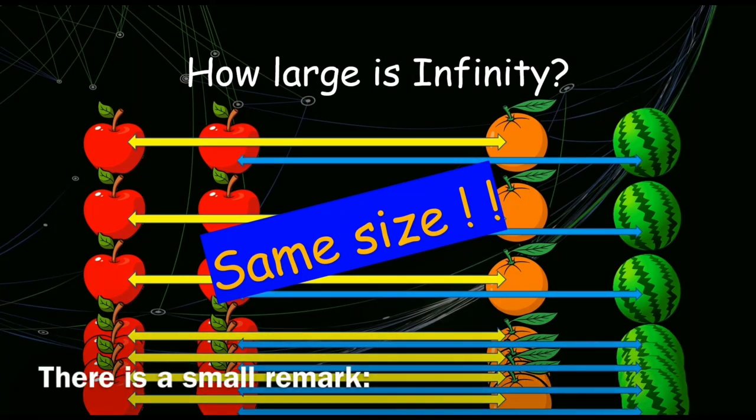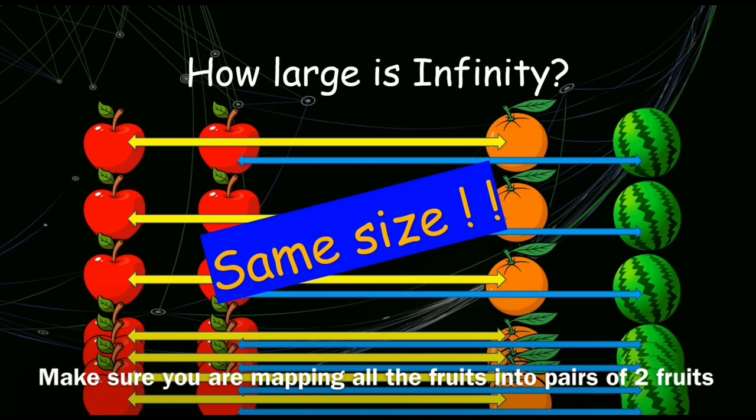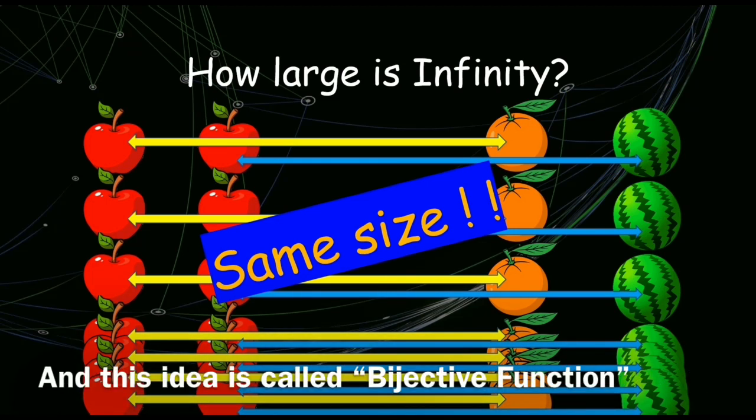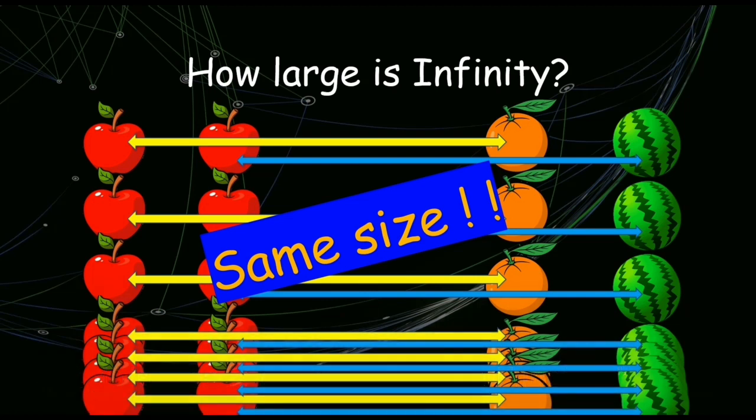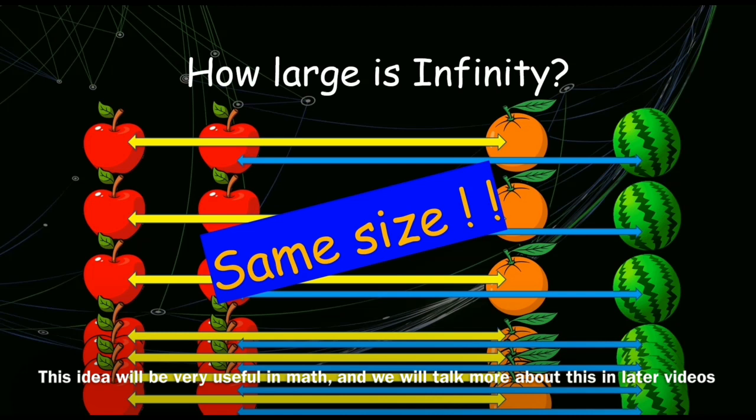There is a small remark. Make sure you are mapping all the fruit into pairs of two fruits. And this idea is called bijective function. This idea will be very useful in math and we will talk more about this in later videos.